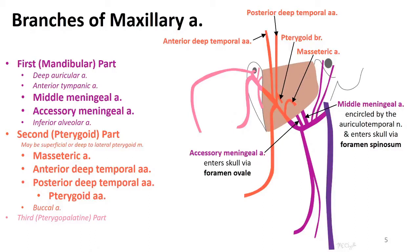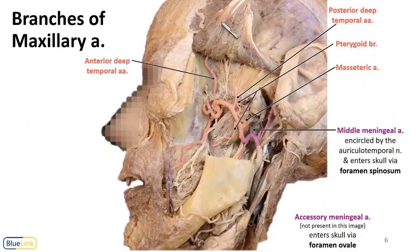That third part — we see many branches, mostly after the pterygomaxillary fissure, which is represented as a tear shape along here. Let's look at these in a donor.